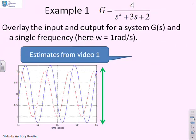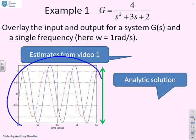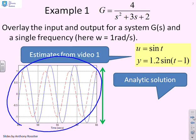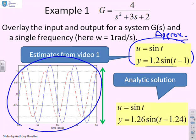Let's compare those solutions with what we got from video one. In video one we had plots like this and inferred the gain and phase from those plots. We said approximately, and I should emphasize this was an approximation—we weren't particularly careful, just reading roughly from the graph—we said y ≈ 1.2·sin(t - 1). Let's compare with the analytic solution: 1.26·sin(t - 1.24).